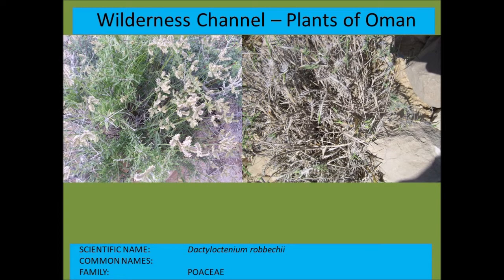Dactyloctenium robecchii is one of the grass species mentioned — it has very stout and sharp leaves which discourages browsers. It's from the Poaceae or grass family.